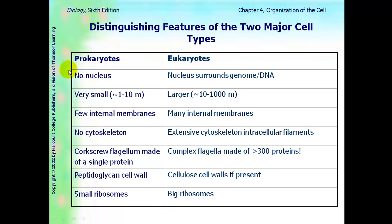The main ones to remember: a prokaryote has no nucleus, and eukaryotes do have a nucleus that's surrounded by a nuclear membrane. Prokaryotes are smaller; eukaryotes are larger. Prokaryotes don't really have internal membranes, but eukaryotes will have a lot of them. There's no cytoskeleton in a prokaryote, but lots of cytoskeleton in a eukaryote. The flagella is a lot simpler in a prokaryote. The cell wall, if present, is made of different material — in a prokaryote it's made of peptidoglycan.